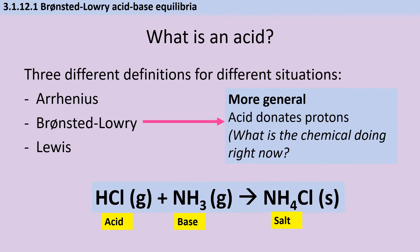The Brønsted-Lowry definition is the one introduced in this chapter, and it says that an acid is a substance that donates a proton and a base is a substance that accepts it. This means that the acid and the base don't need to dissolve, so hydrogen chloride gas reacting with ammonia can still be counted as an acid-base reaction.